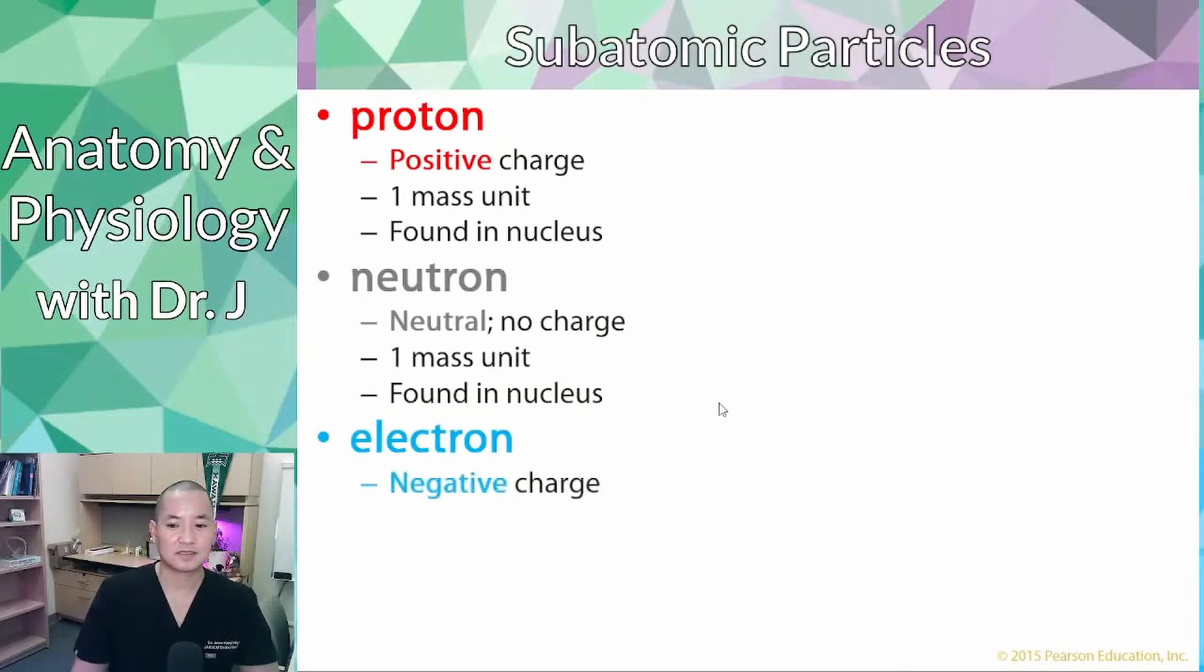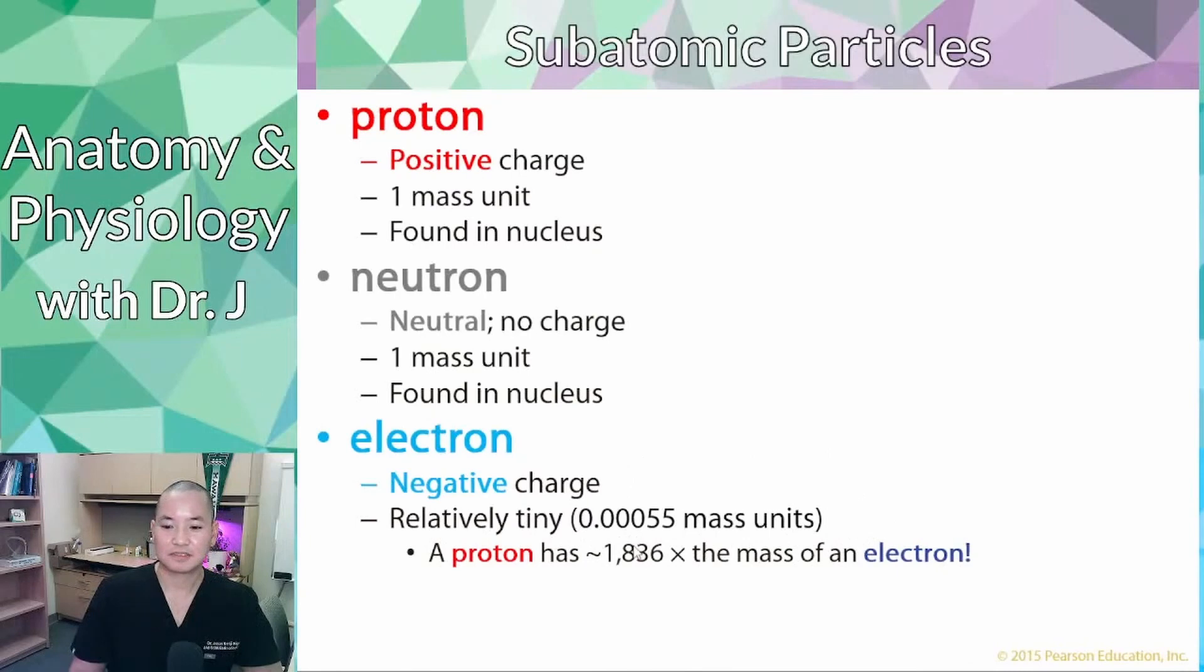Now electrons are negative. So they have negative one charge, and compared to protons and neutrons, they are very tiny. So even though in that previous picture it was showing electrons very big and about the size of a proton, in reality they are super tiny compared to a proton or neutron. Protons are almost over 1800 times the mass of an electron, and these surround the nucleus.